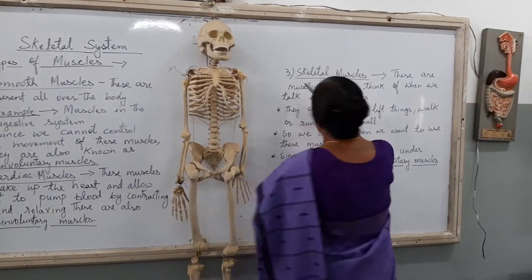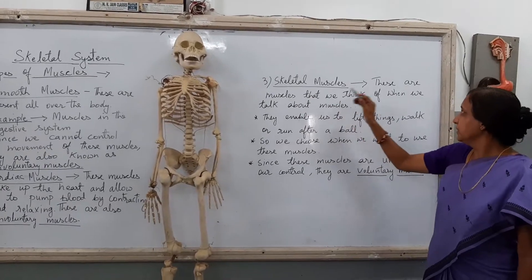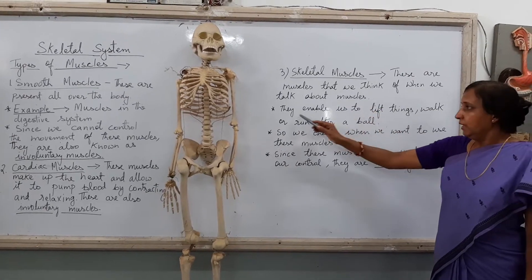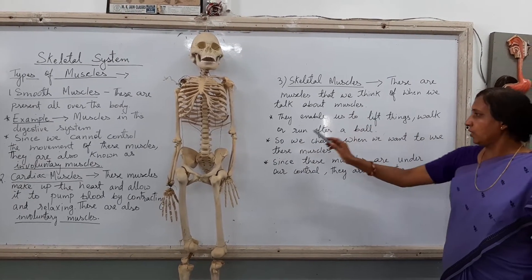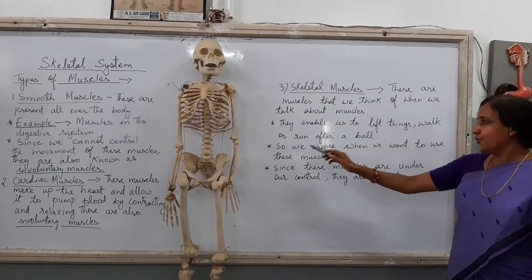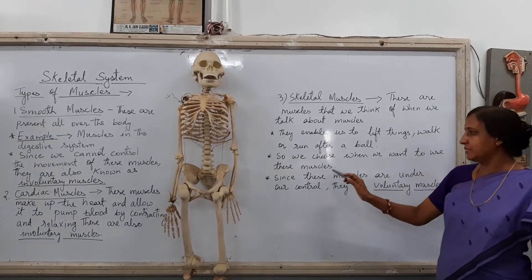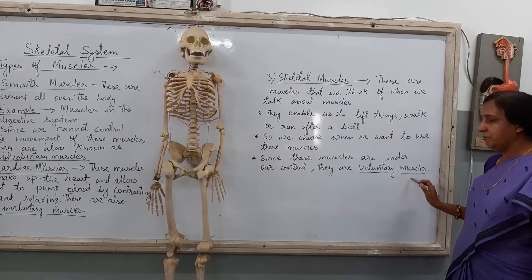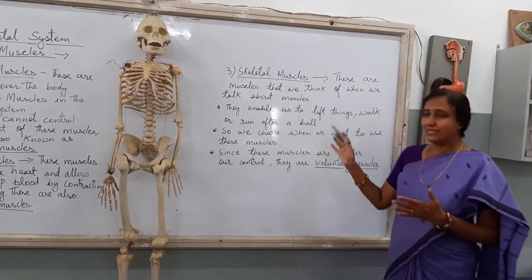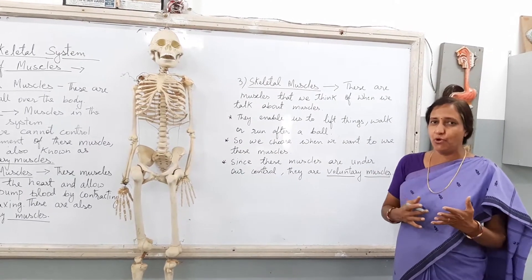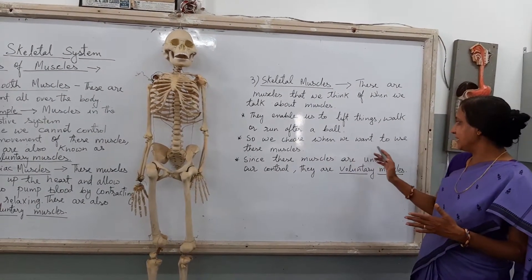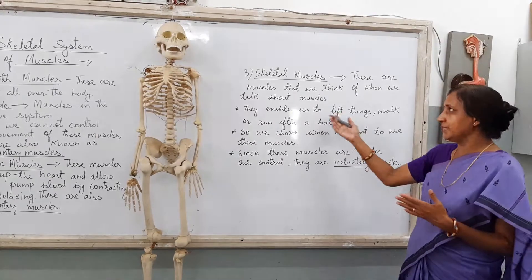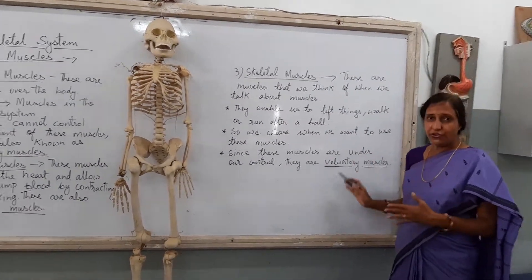The third one is skeletal muscle. These are the muscles that we think of when we talk about muscles. They enable us to lift things, walk, or run after a ball. So we choose when we want to use these muscles. Since these muscles are under our control, they are voluntary muscles. These muscles help you to do all kinds of movement — running, walking, everything. When you are lifting something, walking, or throwing a ball, you are using this kind of muscle.